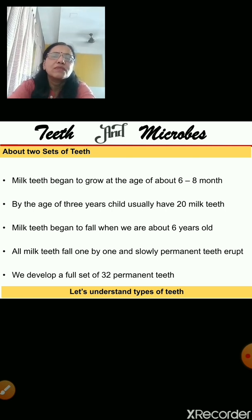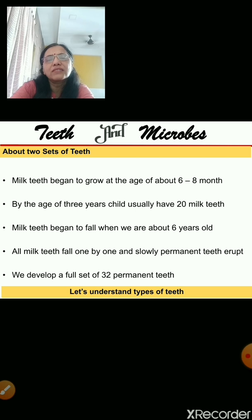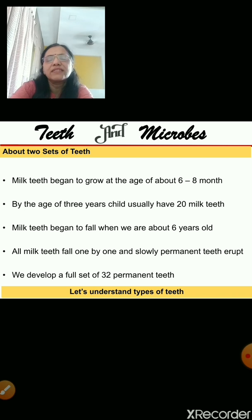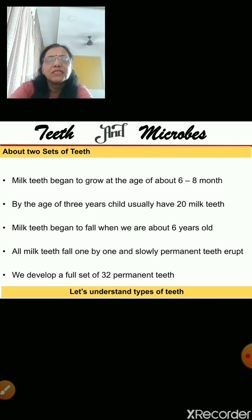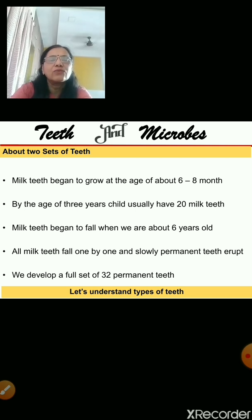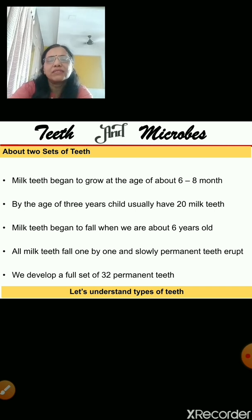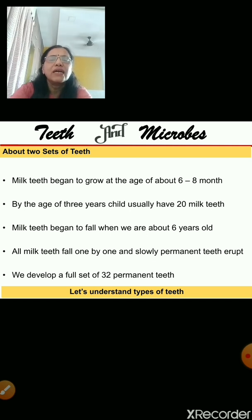When you were small — when you were born — you were not having any teeth. You can ask your mother or look at your pictures to confirm. The teeth began to grow when you were about 6 months old, one by one. Those teeth are known as milk teeth. And up to the age of 3 years, you got all 20 milk teeth.